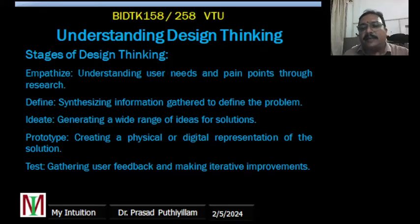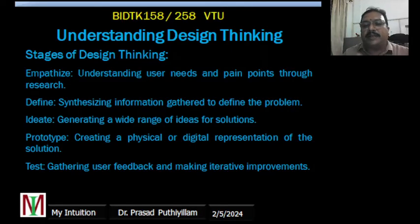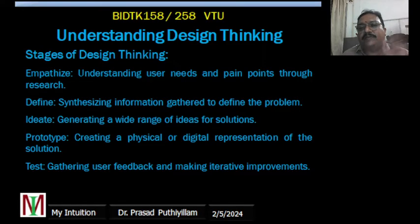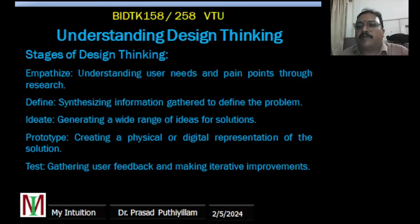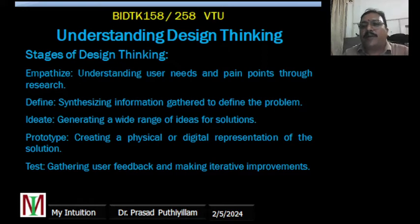Then comes Ideate — it generates a variety of ideas for solving the problems. We found what has to be solved and the possible outcome; now different varieties of ideas come in on how to execute that — that is the Ideate stage. Then comes Prototype, which creates a physical or digital representation of the solution. Before producing the actual one, a sample is created to check whether everything is working properly, whether the concept works — it may be a machine, a model, or even a website. A prototype has to be created, then it is given for Testing, where we gather user feedback, refine the solutions, and make improvements.